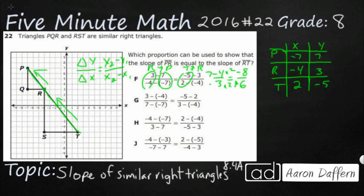For option G, 3 over 7 is not one of our coordinates set up as y over x, so they didn't get this correct. Looking at negative 4 and negative 7 — those are two x-coordinates, so that's why G doesn't work. For option H, negative 4 over 3 might look like r, but negative 4 is actually the x-coordinate, not the y. Remember, slope needs to be y over x. And this one just inverted the x and y, so H is not correct.